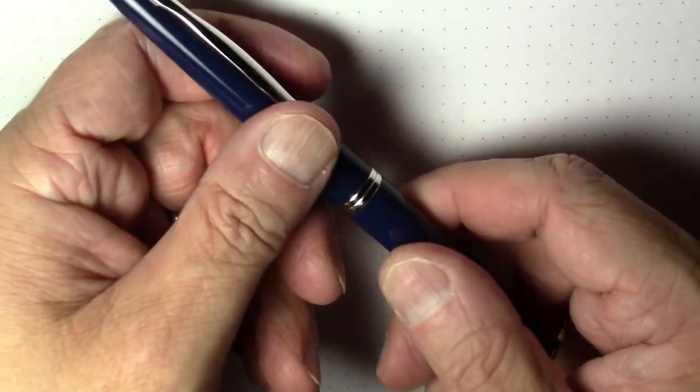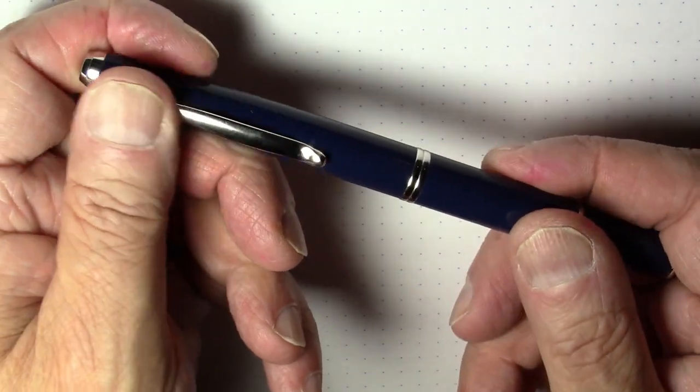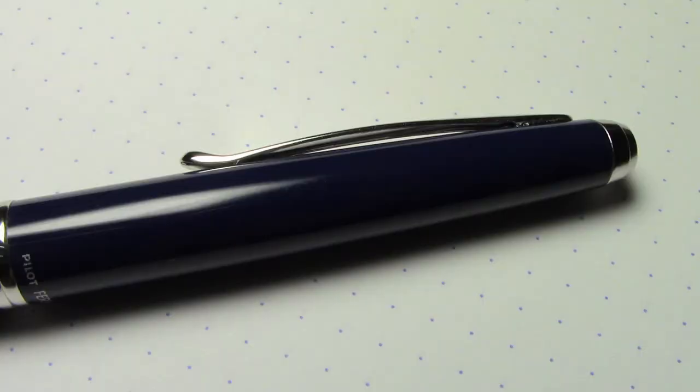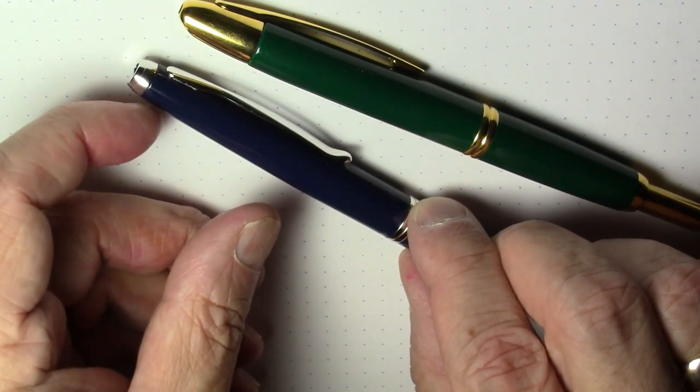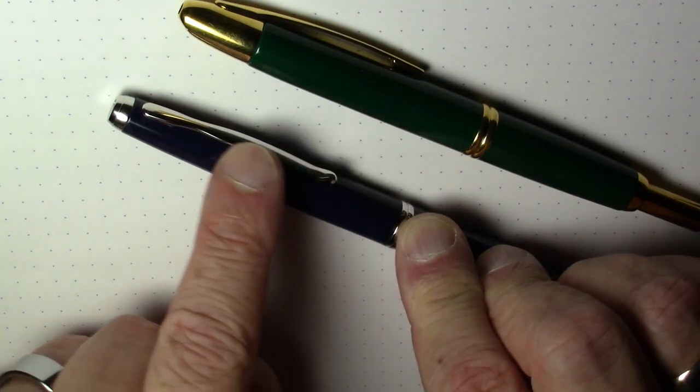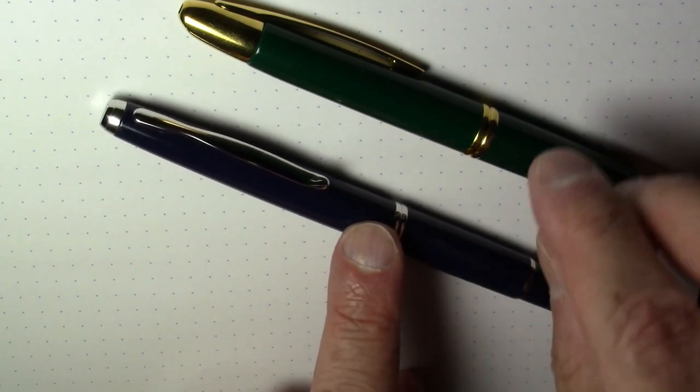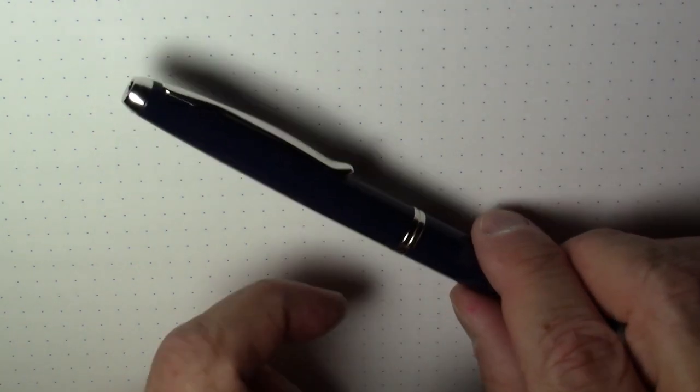It is an all metal pen pretty much. The clip also is quite a bit different than the normal Vanishing Point. This has more of a swooping effect and has the little upturned lip which allows you to clip it a little bit easier.